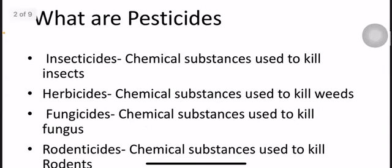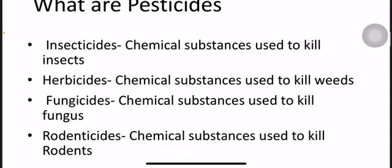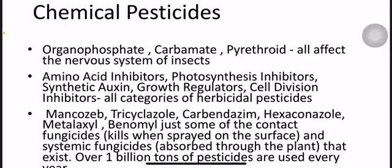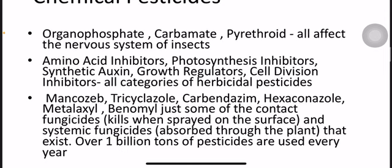Production and conception of pesticides. What are pesticides? An insecticide is a chemical substance used to kill insects. A herbicide is a chemical substance used to kill weeds. A fungicide is a chemical substance used to kill fungus. Chemical pesticides include amino acid inhibitors, photosynthesis inhibitors, growth regulators, and cell division inhibitors. Examples of pesticides include Metaxyl and Carbosine.